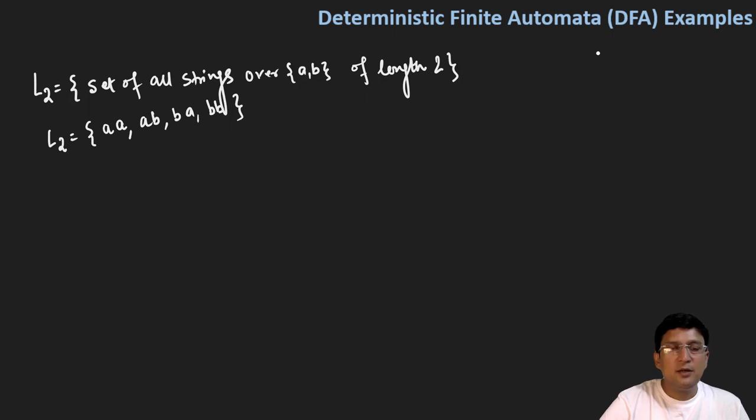Let's make the automata for this. So this automata should be such that it rejects strings of length 1, rejects strings of length 0, rejects strings of length 3, and accepts only strings of length 2. So let's say that q0 is the start state.